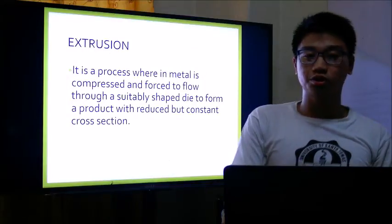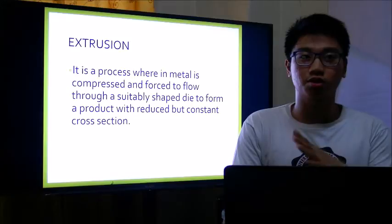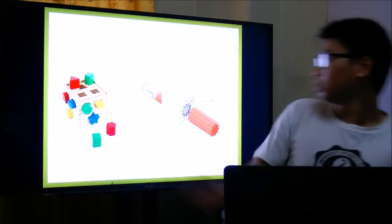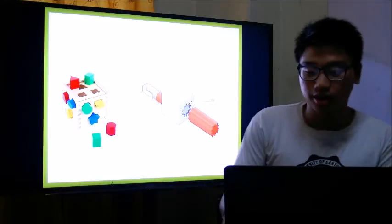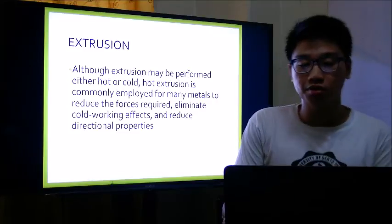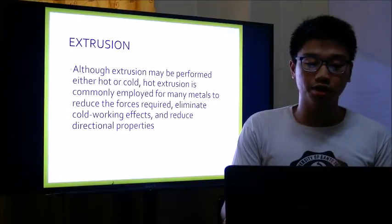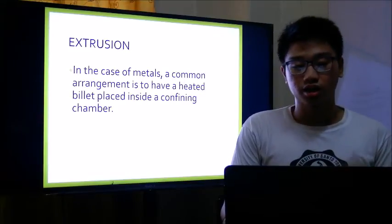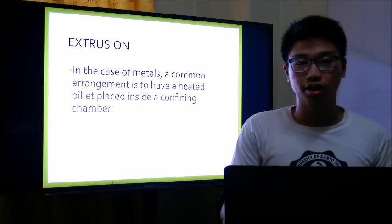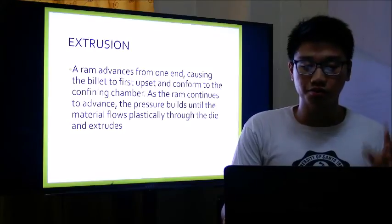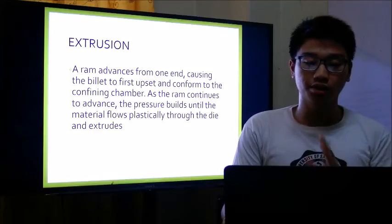Extrusion is a process wherein metal is compressed and forced to flow through a suitably shaped die to form a product of the desired cross-section. Although extrusion may be performed either hot or cold, hot extrusion is commonly employed for many metals to reduce the force required, eliminate cold working effects, and reduce directional properties. In the case of metals, a heated billet is placed inside the confining chamber. A ram advances from one end causing the billet to first upset and conform to the confining chamber; as the ram continues to advance, pressure builds until the material flows plastically through the die.